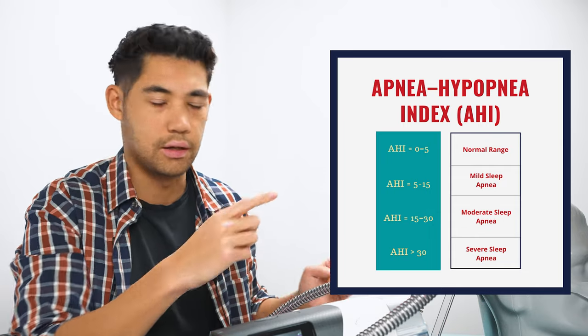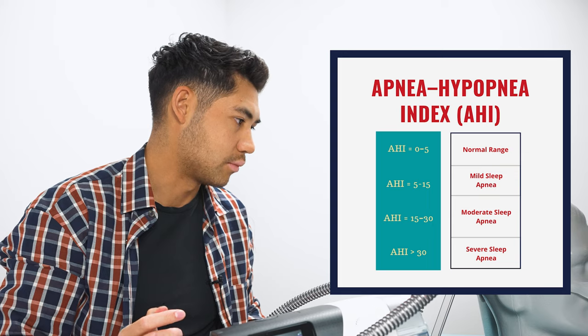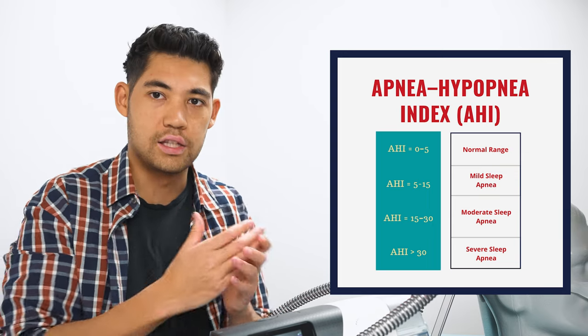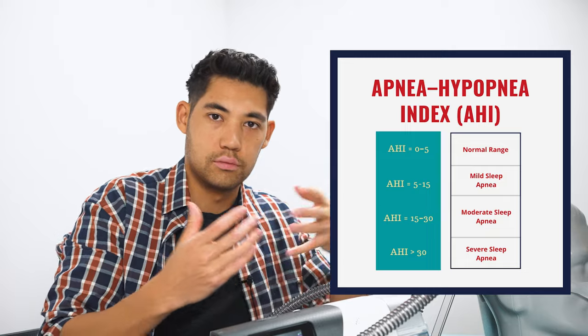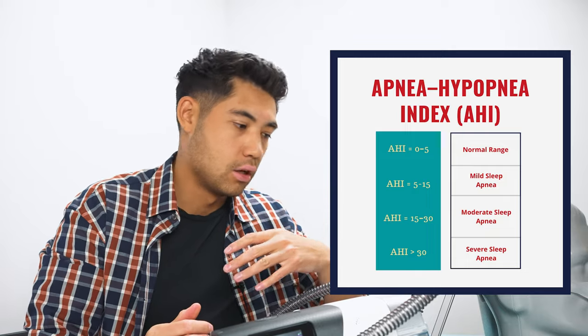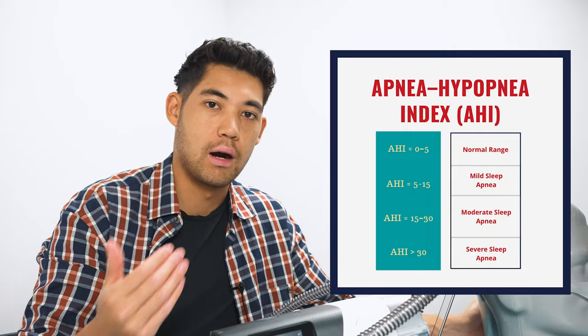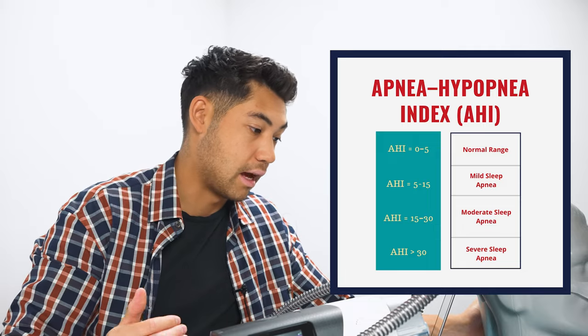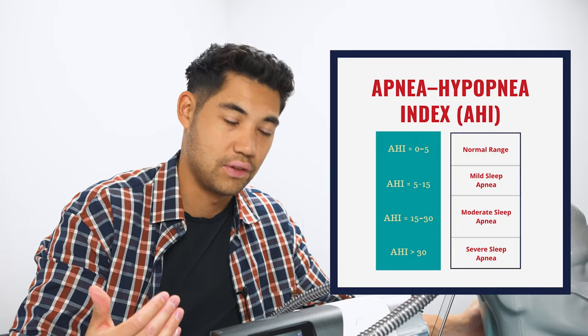Okay, and so actually, I'll just put it here, what a chart will look like. So generally, zero to five is your range of having normal sleep, no sleep apnea. Five to 15 is your mild sleep apnea. Higher than that, you're getting to moderate and severe sleep apnea.